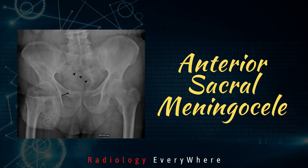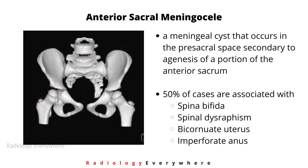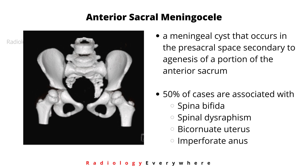Hello everyone, welcome to Radiology Urea YouTube channel. Today we are going to discuss about anterior sacral meningocele. The anterior sacral meningocele is a meningeal cyst that occurs in the pre-sacral space, secondary to agenesis of a portion of the anterior sacrum. 50% of these anterior sacral meningoceles are associated with spina bifida, spinal dysraphism, bicornuate uterus, or imperforate anus.